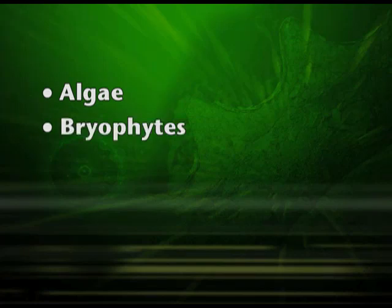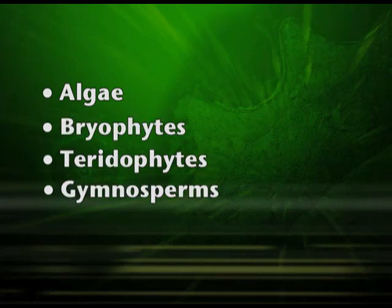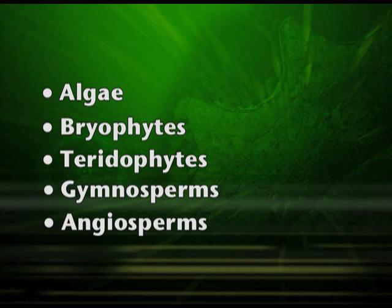The plant kingdom is referred to as Plantae. Plants are autotrophs — they are able to prepare their own food by the process called photosynthesis. It is because plants have the pigment called chlorophyll, and with the help of sunlight they are able to prepare the food. Under the plant kingdom we will be dealing with algae, bryophytes, pteridophytes, gymnosperms, and angiosperms.